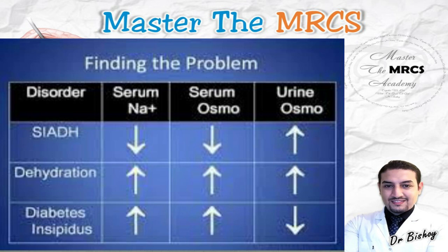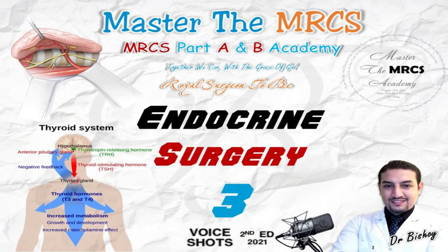The patient will be hyponatremic, urinary sodium will be high — losing blood sodium in the urine — but urine will be inappropriately concentrated and the patient euvolemic, with no congestive heart failure, no cirrhosis, and no nephrotic syndrome, with absence of renal, adrenal, or thyroid insufficiency. In exam terms: hyponatremic patient with low serum osmolarity and high urine osmolarity — this is SIADH.